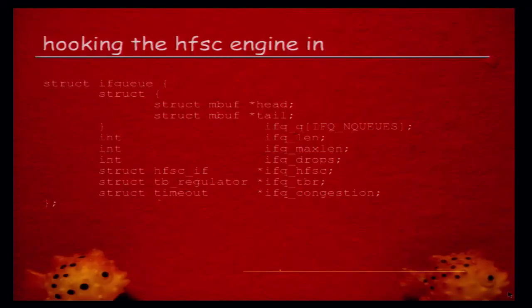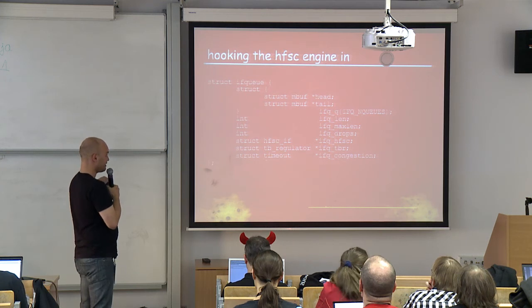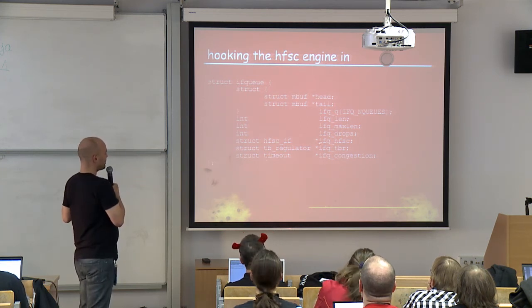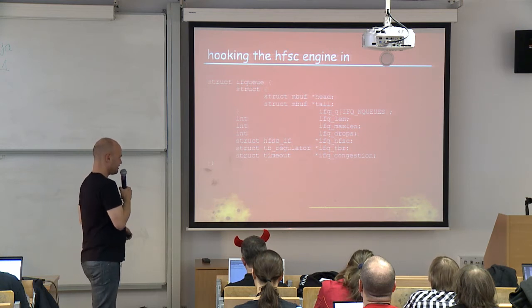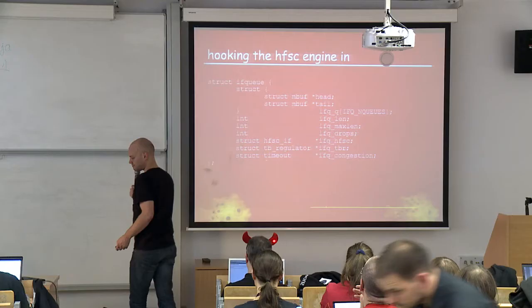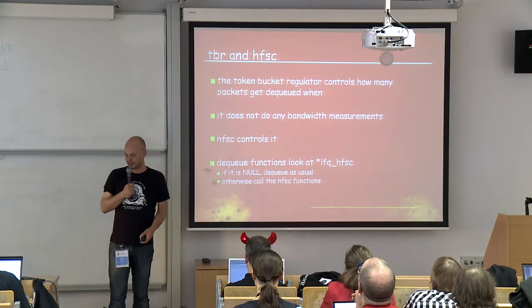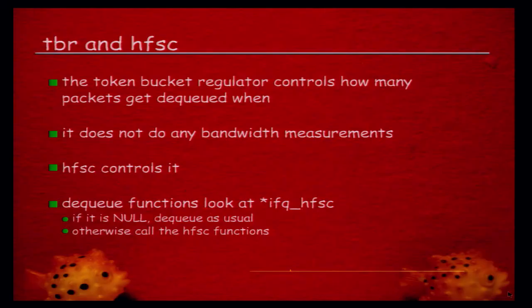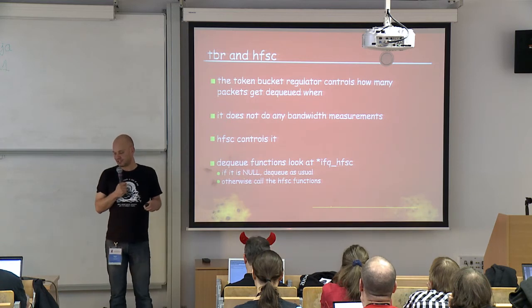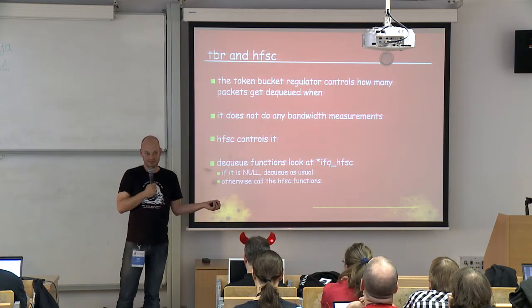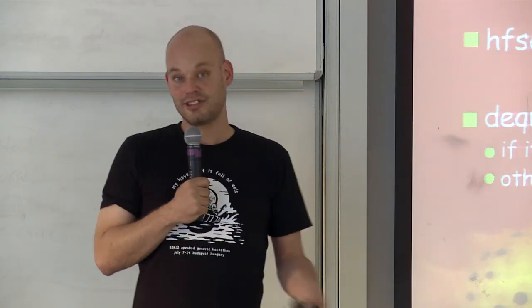Hooking HFSC in isn't all that hard. We modify struct ifq — not introducing yet another IFQ variant — by adding a pointer to HFSC-specific stuff and a pointer to the token bucket regulator (TBR) specific stuff. If not operating HFSC on that interface, it's simply a null pointer. The TBR controls how many packets get dequeued and when — it doesn't do bandwidth measurement itself, that's HFSC's job. The dequeue function checks that pointer: if null, call the classic dequeuing functions; if set, call the HFSC-specific functions.